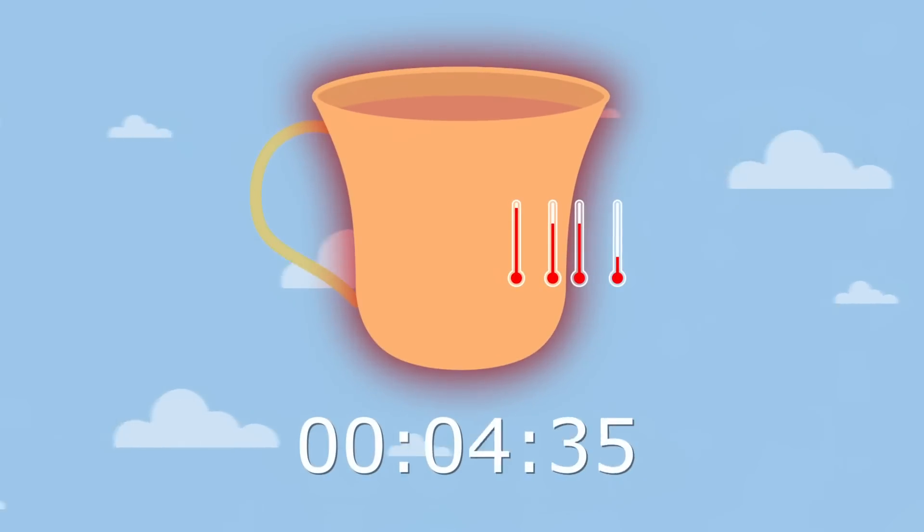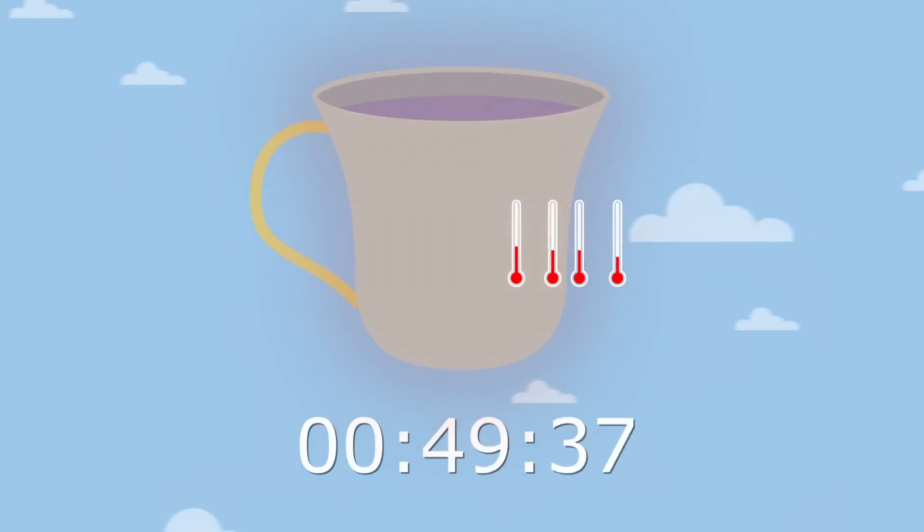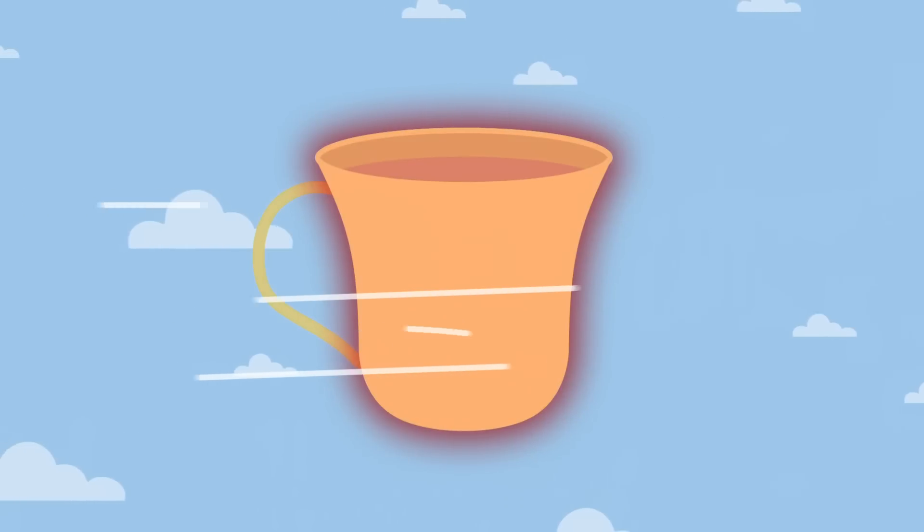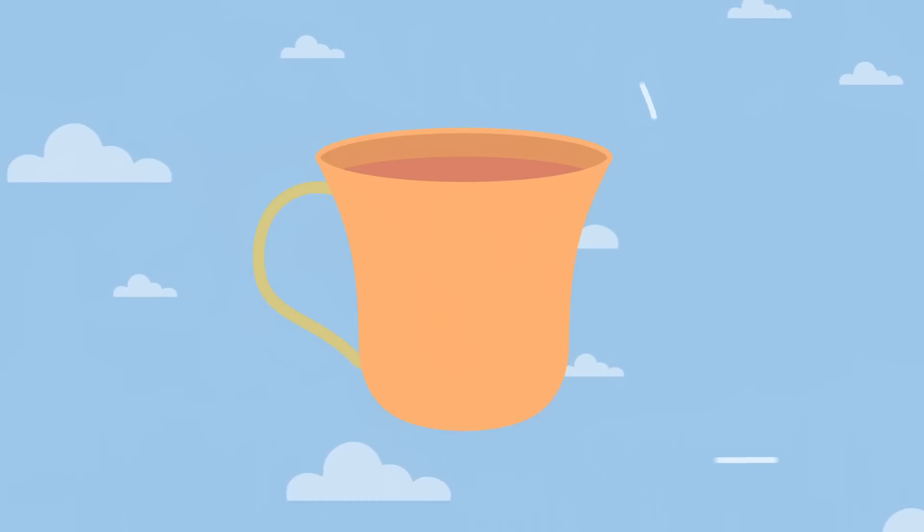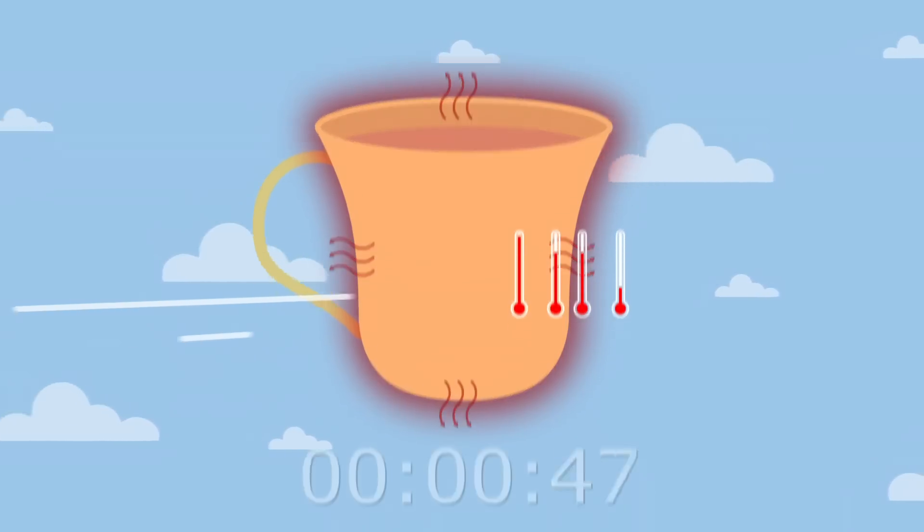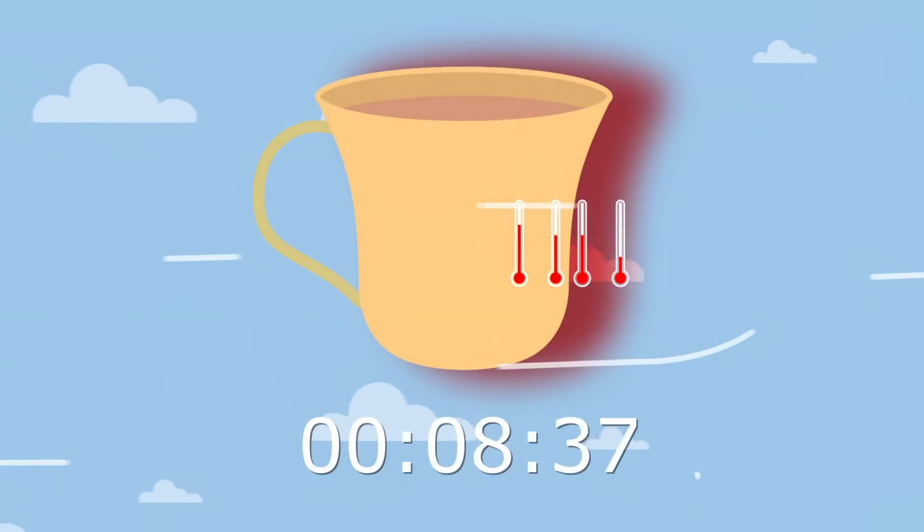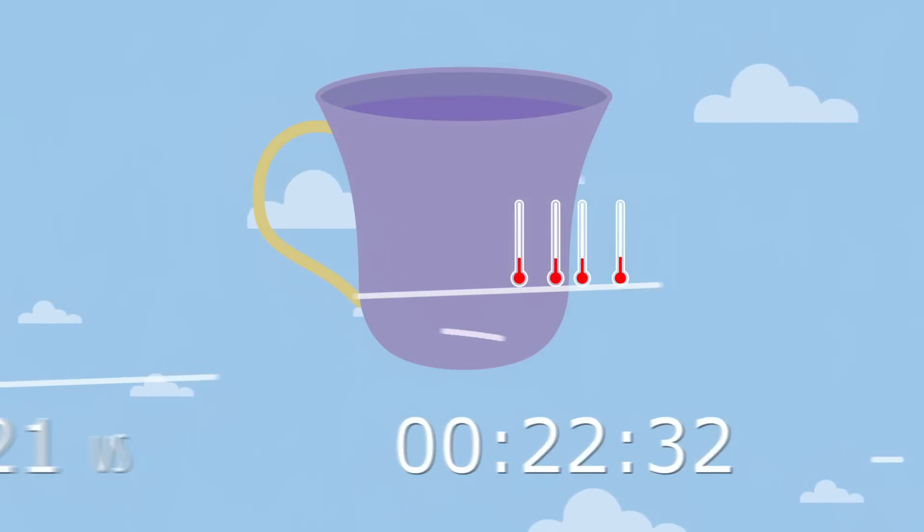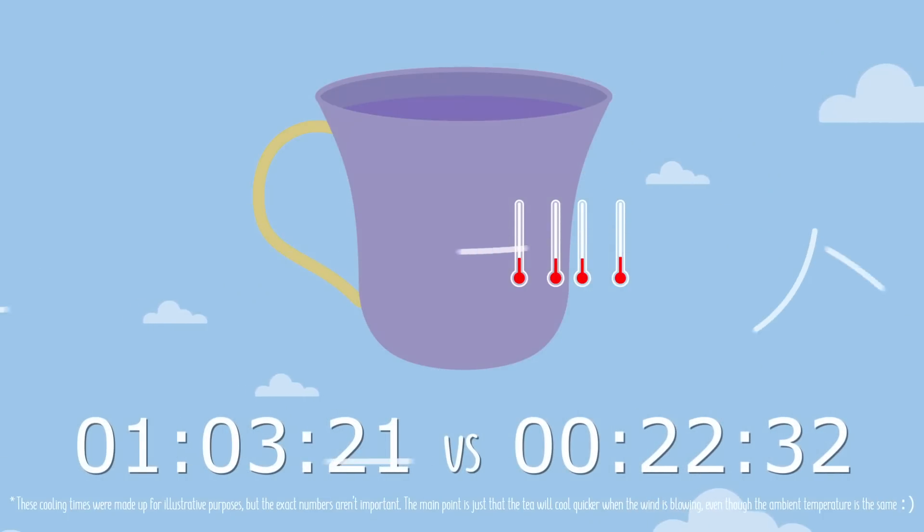Now, if left long enough, the energy would fully dissipate, and the cup would cool to the ambient temperature. But it would take a while. That is, unless there was suddenly a gentle breeze. Because in that case, the layer of warm air particles would be carried away, and new air particles that hadn't yet been heated would take their place. Now that initial heat transfer can happen all over again thanks to the new temperature difference. And if the breeze continues, then in a short while, our cup and the grass tea within it would cool down to the temperature of the air, just like without the breeze, but this time, much quicker.